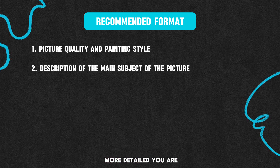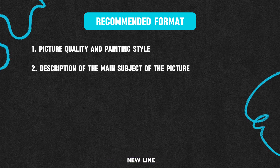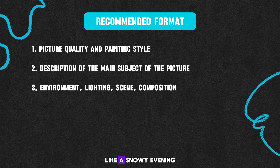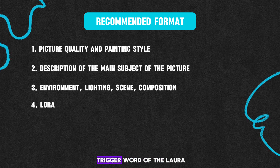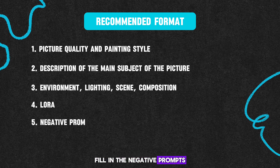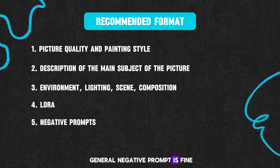The more detailed you are, the more accurate the generated picture will be. Add a comma after writing and start a new line. Next up is the description of the lighting and environment, like a snowy evening or a sunny meadow, and add a description of the lighting used at the end. The last line is for adding the trigger word of the LoRA you want to use. After positive prompts, fill in the negative prompts — generally, just filling in some general negative prompts is fine.